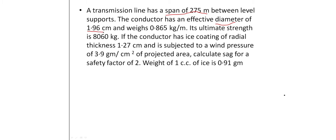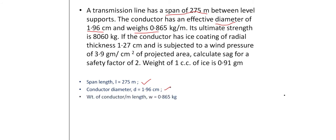The conductor diameter is 1.96 cm. If SAG is zero, tension is very high. Whenever there is wind flow or atmospheric conditions change, the conductor can break mechanically. So SAG must be managed carefully.